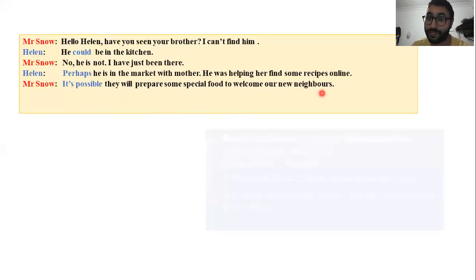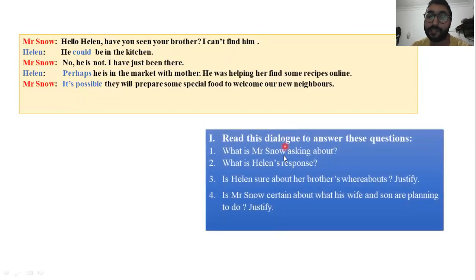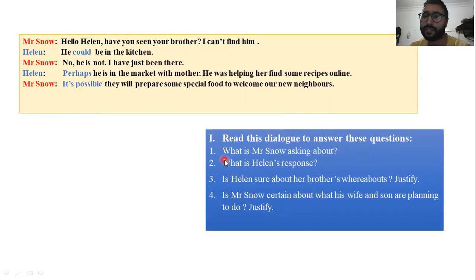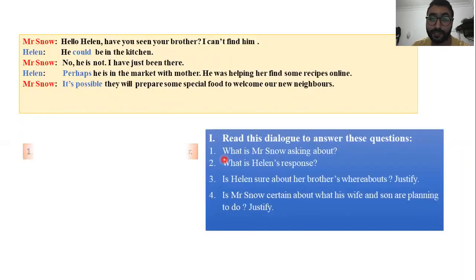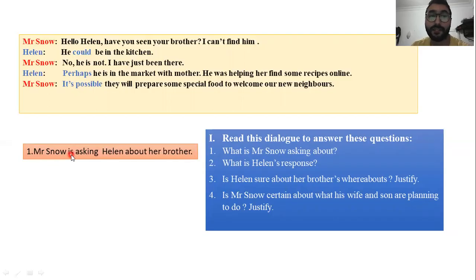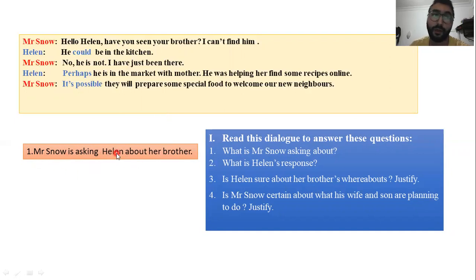Read the dialogue and try to answer these four questions. Question number one: what is Mr. Snow asking about? Mr. Snow is asking Helen about her brother — he said 'Have you seen your brother?'